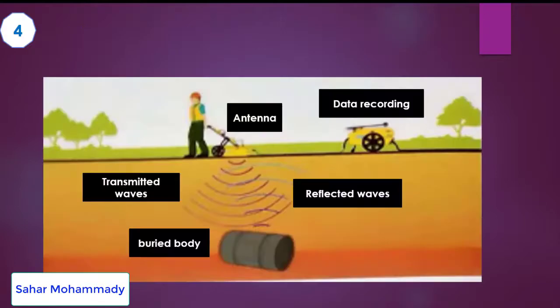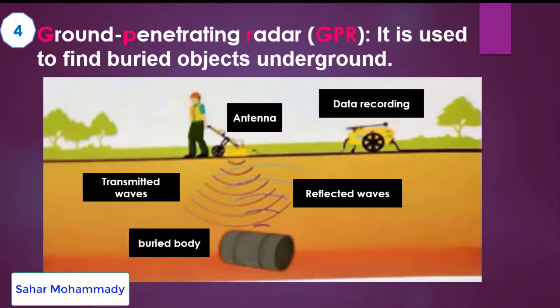You will study magnetometers in science class. The most important tool is GPR — Ground Penetrating Radar — used to find buried objects under the ground. It transmits waves which go through the ground to find buried bodies or objects, then the waves reflect back. We then have data recording which tells us whether there is a buried body or object so we can start to dig.